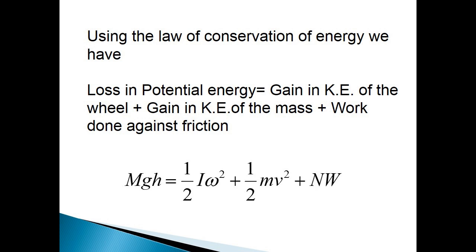Using the law of conservation of energy, we have: Loss in potential energy is equal to gain in kinetic energy of the wheel plus gain in kinetic energy of the mass plus work done against friction. In equation form, Mgh = ½Iω² + ½mv² + NW.